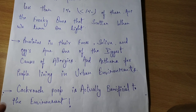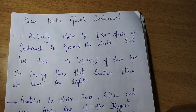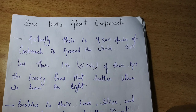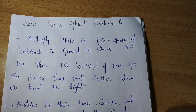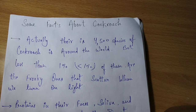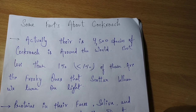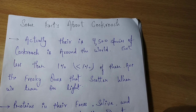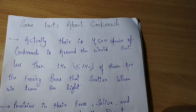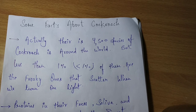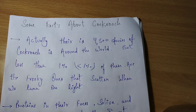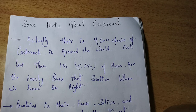Some facts about cockroach: there are 4,500 species of cockroach around the world, but less than 1% of them are the ones that scatter when we turn on the light. कुछ ऐसे cockroach भी होते हैं जो venome content करते हैं अपनी body में — meaning some species contain venom and their bite can be dangerous.